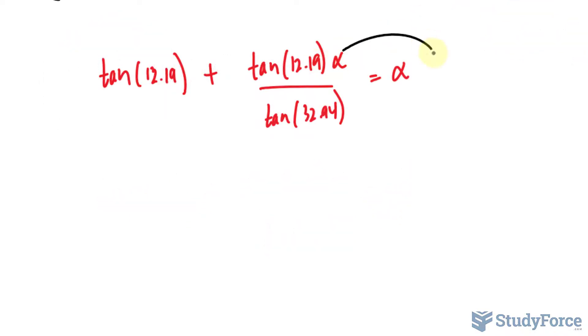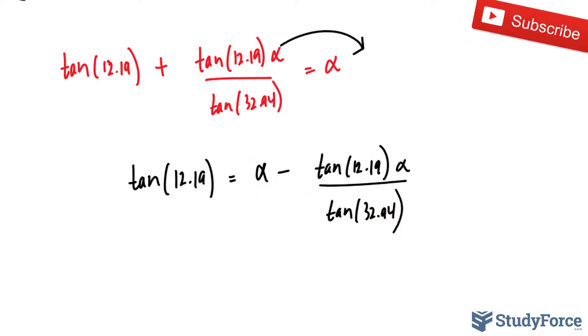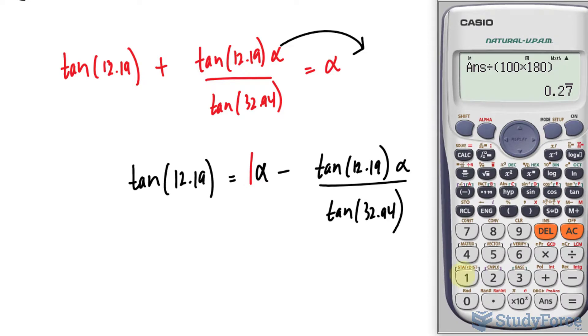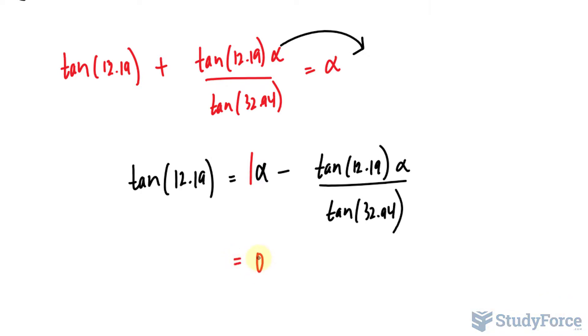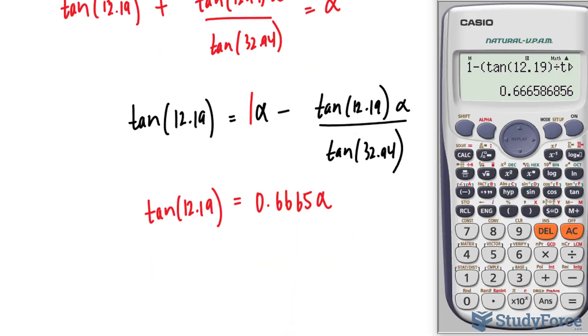We need to isolate for alpha, so I'll take that over. I have tangent, again, 12.19 is equal to alpha minus that term. Now, the number associated with alpha, the coefficient is 1. Let me use my calculator. 1 minus tangent 12.19 divided by tangent of 32.94. That gives me the right side. And I'll write it down as 0.6665 alpha. And on the right side, tangent of 12.19. Dividing both sides now by this factor. Divide now by that previous outcome. And I get 0.3240.